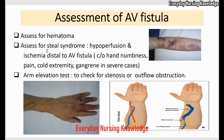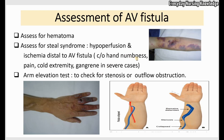You have to assess for steal syndrome. Steal syndrome is hypoperfusion and ischemia — decreased blood supply to the tissues distal from the AV fistula. As a result, the patient can complain of hand numbness, pain, and cold extremities. If the blood supply is completely decreased, gangrene can develop.